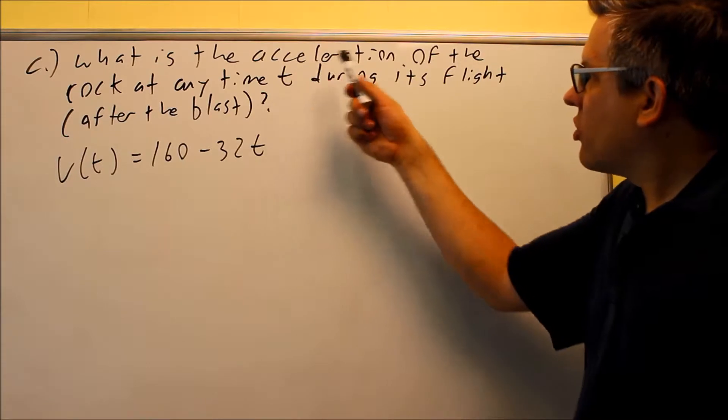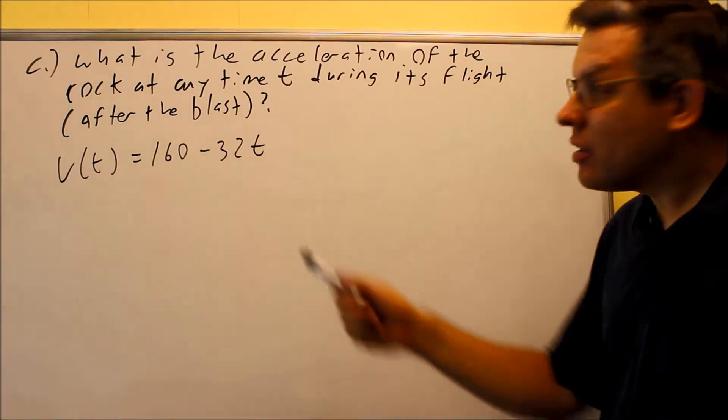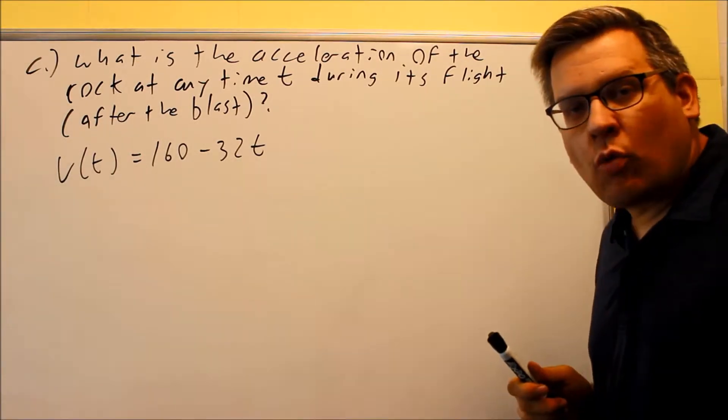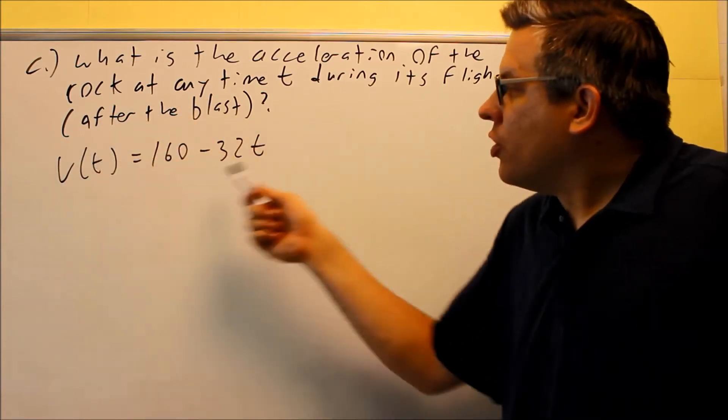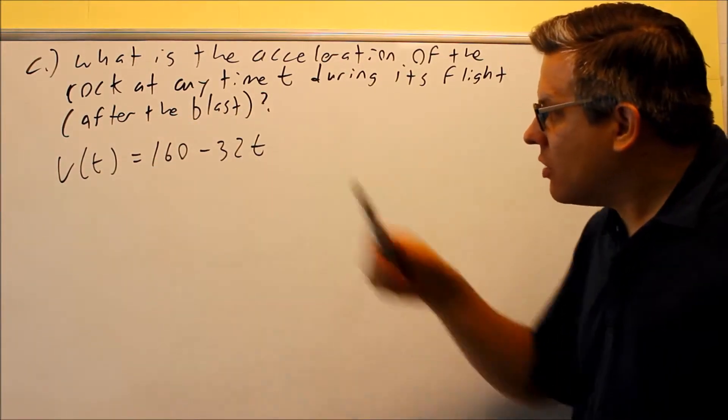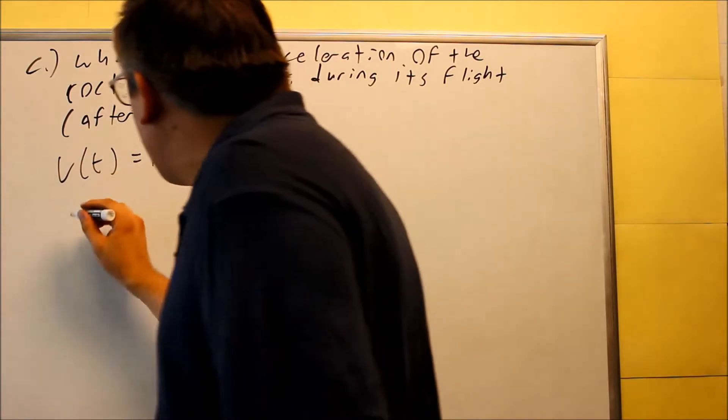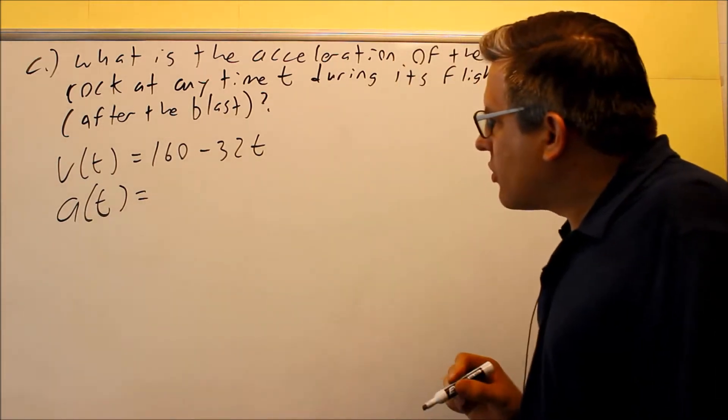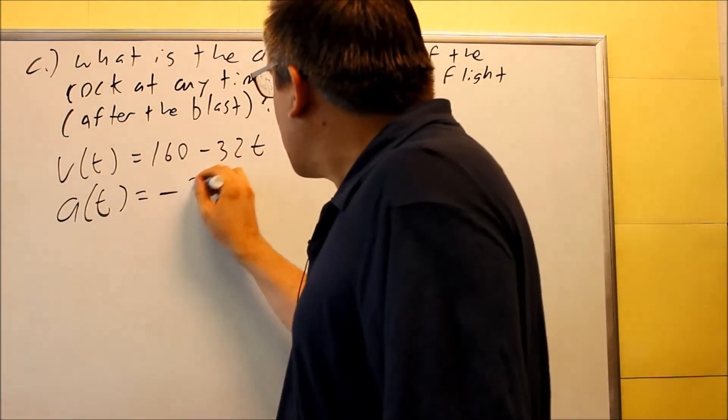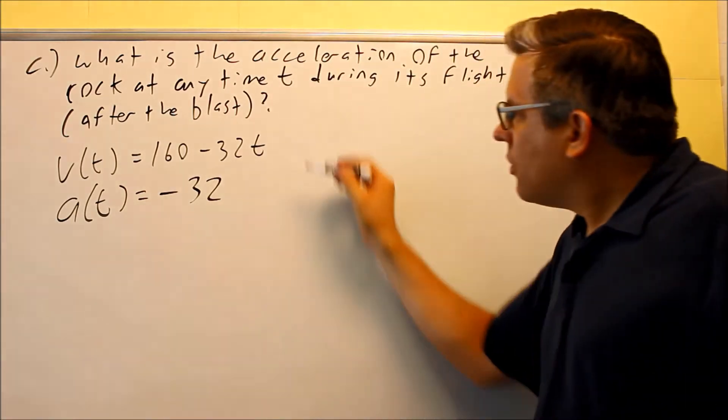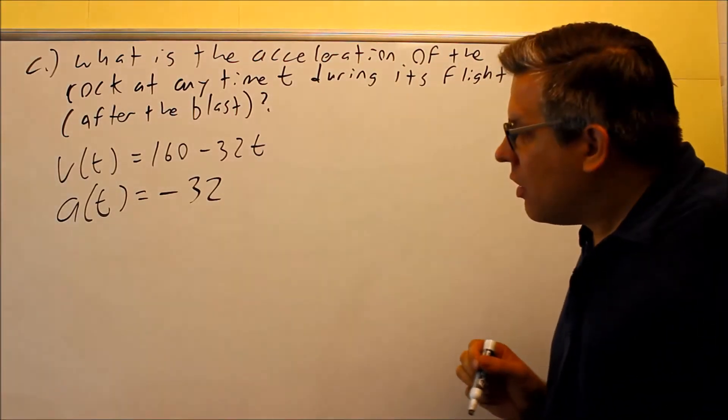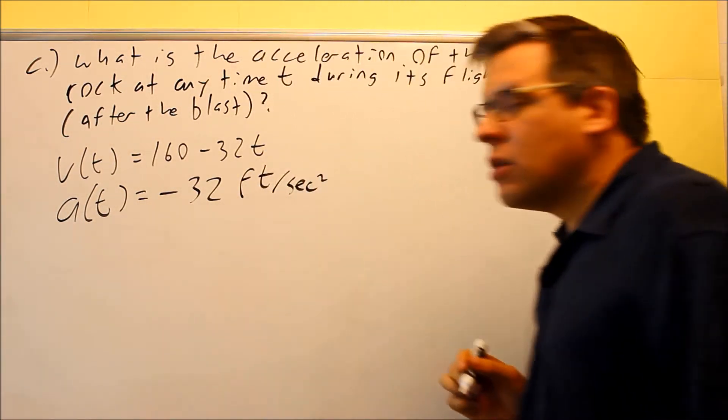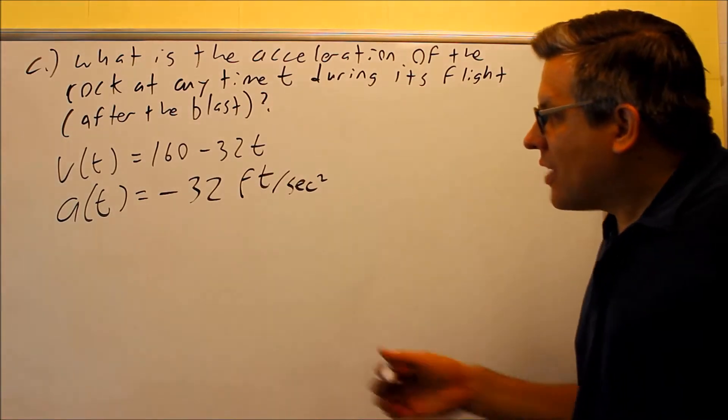Part c, what is the acceleration of the rock at any time t during its flight after the blast? So since we're asking for acceleration, we've got to find the acceleration function. We do that by taking the derivative of velocity that's given here. Derivative of velocity is acceleration. So if I take the derivative using the power rule, the derivative of 160, that's 0. This one, I just get negative 32 because it's a constant times the variable. So I get negative 32, and this would be feet per second squared would be the units on that.